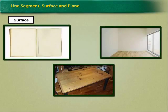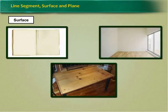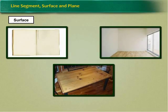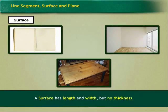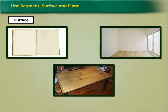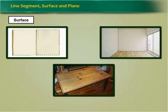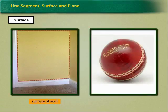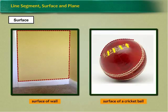Observe a page of your book, wall of your house, and top of table. You can see a surface, right? A surface has length and width but no thickness. It can be flat or curved. Example: Surface of wall is flat while the surface of a cricket ball is curved.